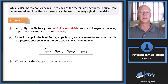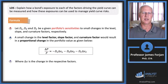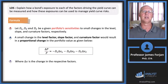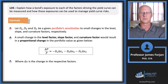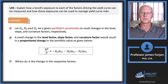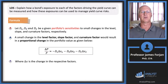A bond portfolio's sensitivities to these three factors are measured as DL, DS, and DC — for level, slope, and curvature respectively. We can incorporate these into an estimate of the percentage change in bond price: ΔP/P ≈ −DL × ΔL − DS × ΔS − DC × ΔC, where small changes in level, slope, or curvature allow us to determine the impact on bond price.